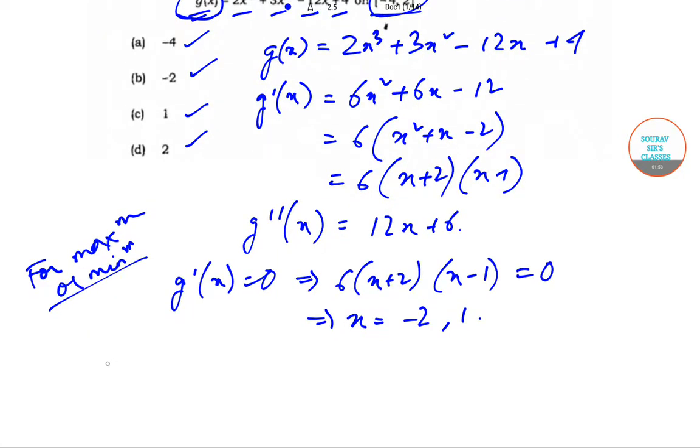So now let us find out g''(-2). The g''(-2) is 12(-2) + 6, that is equal to -24 + 6, that is -18, which is less than 0. So we get a maximum over here.